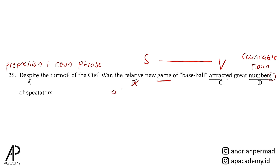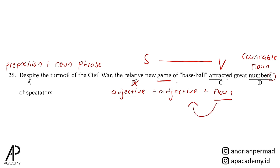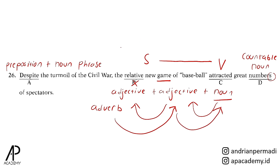Relative adalah adjective, lalu new adalah adjective, dan game adalah noun. Dalam pola word order untuk noun phrase, beberapa kata yang bisa muncul sebelum noun adalah adjective. Dan yang muncul sebelum adjective seharusnya bukan adjective kembali, tapi adverb. Adverb ini menjelaskan adjective setelahnya, dan adjective tersebut menjelaskan noun. Oleh karena itu, relative sebagai adjective perlu diubah menjadi adverb: relatively. Jawabannya adalah B.